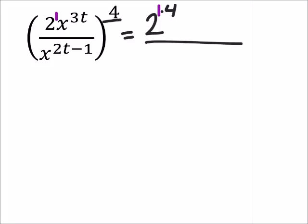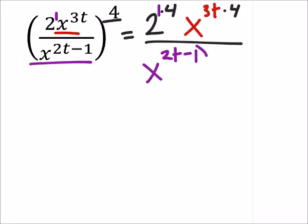Now on the other hand, we've got this x to the power of 3t. We're also going to multiply that by 4. And then in the denominator, we've got x to the power of 2t minus 1, and we're going to multiply all of that by 4 as well. Notice I put that expression 2t minus 1 in parentheses. That is on purpose.